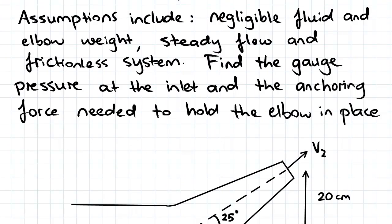Assumptions include negligible fluid and elbow weight, steady flow, and frictionless system. So we're asked to find the gauge pressure at the inlet and in part 2 the anchoring force needed to hold the elbow in place.